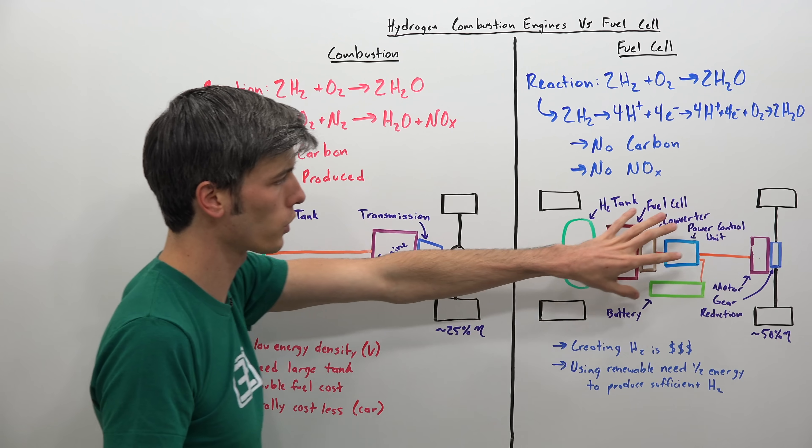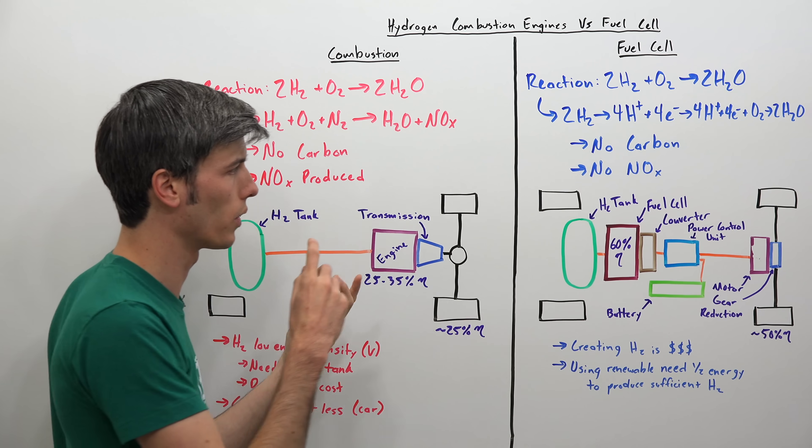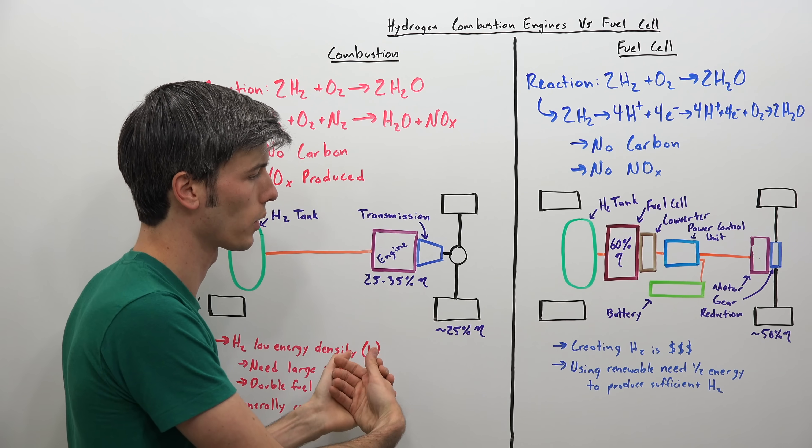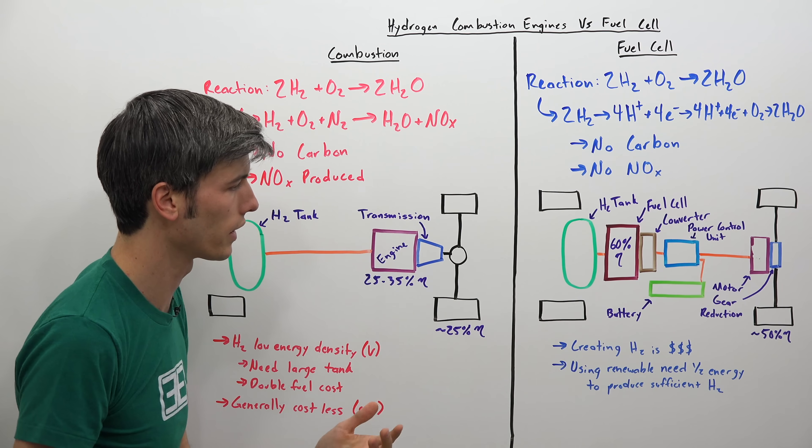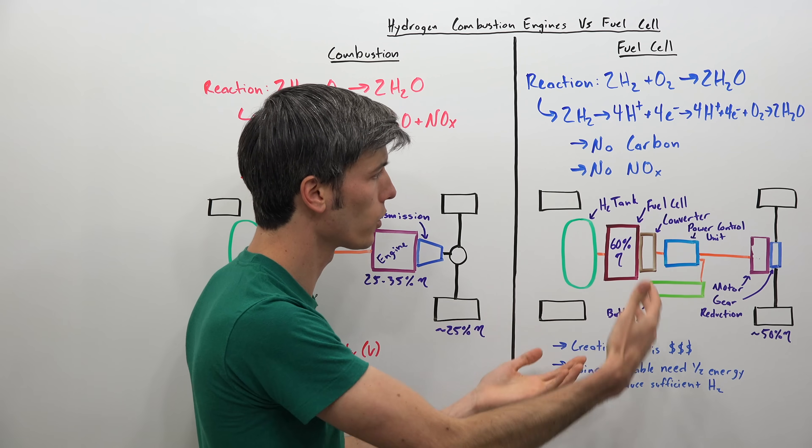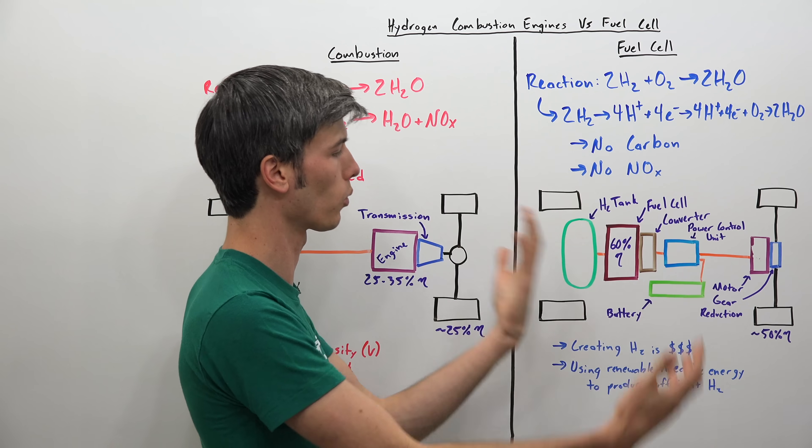If this is more efficient and hydrogen is very expensive, and let's say, in the ideal world, you need renewable energy to be creating that hydrogen for this entire scenario to be environmentally friendly. So you need half the energy, and so that means you need half those renewable energy producing resources if the vehicle is twice as efficient.